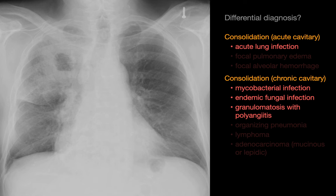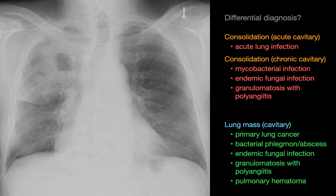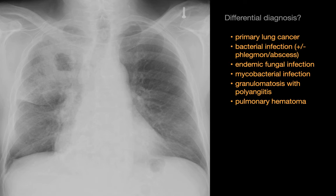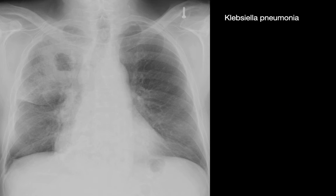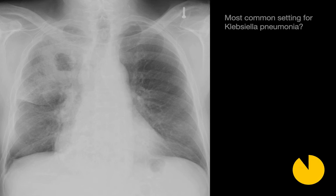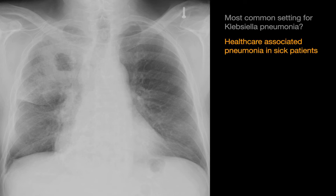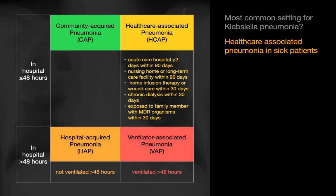There is some overlap between the cavitary consolidation list and the cavitary mass list. If we eliminate all the duplications, we end up with a combined differential diagnosis. This particular case was an example of Klebsiella pneumonia. The most common setting for Klebsiella pneumonia is as a healthcare-associated pneumonia in a sick patient, and there are many ways of categorizing pneumonias by setting.